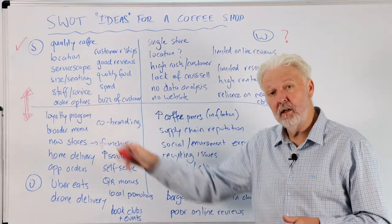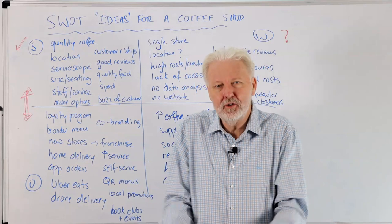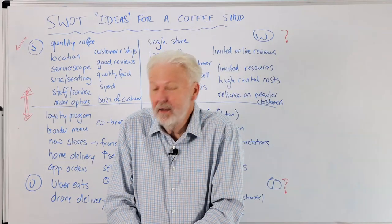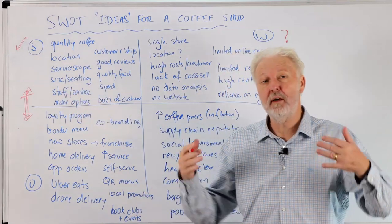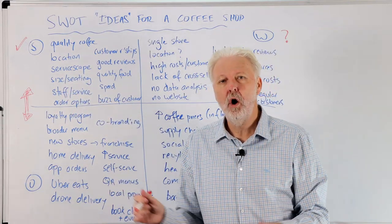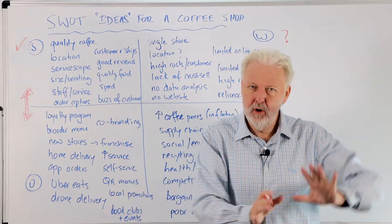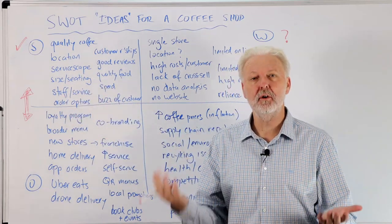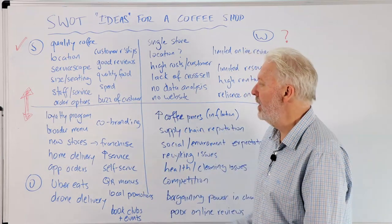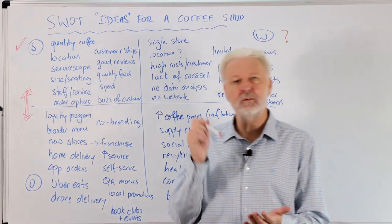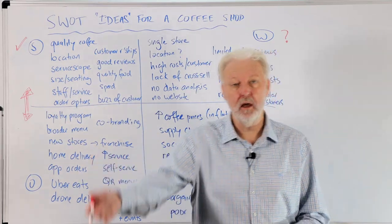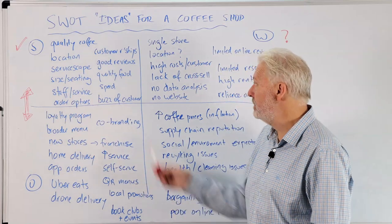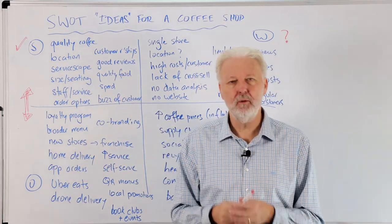Consider size and seating — no doubt you've been to a coffee shop where you feel really closed in and the seats are too close together. It could instead be quite spacious, with a choice of seating: lounge chairs, high chairs, or outdoor seating. We could have high quality staff and great service. Different ordering options are also a strength — ordering via QR code, an app, going to the counter, table service, or potentially a drive-through.